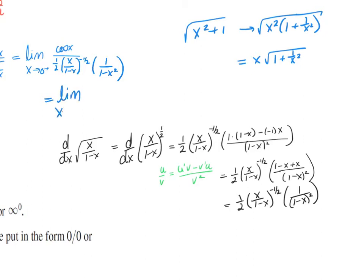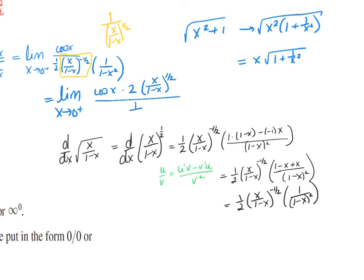This is the limit as x goes to 0 from the right-hand side of cosine(x) over — and this part is 1 over (x/(1−x)) to the 1 half. I'm going to move that up and multiply by 2, and also by (x/(1−x)) to the positive 1 half, and then 1 over (1−x)².